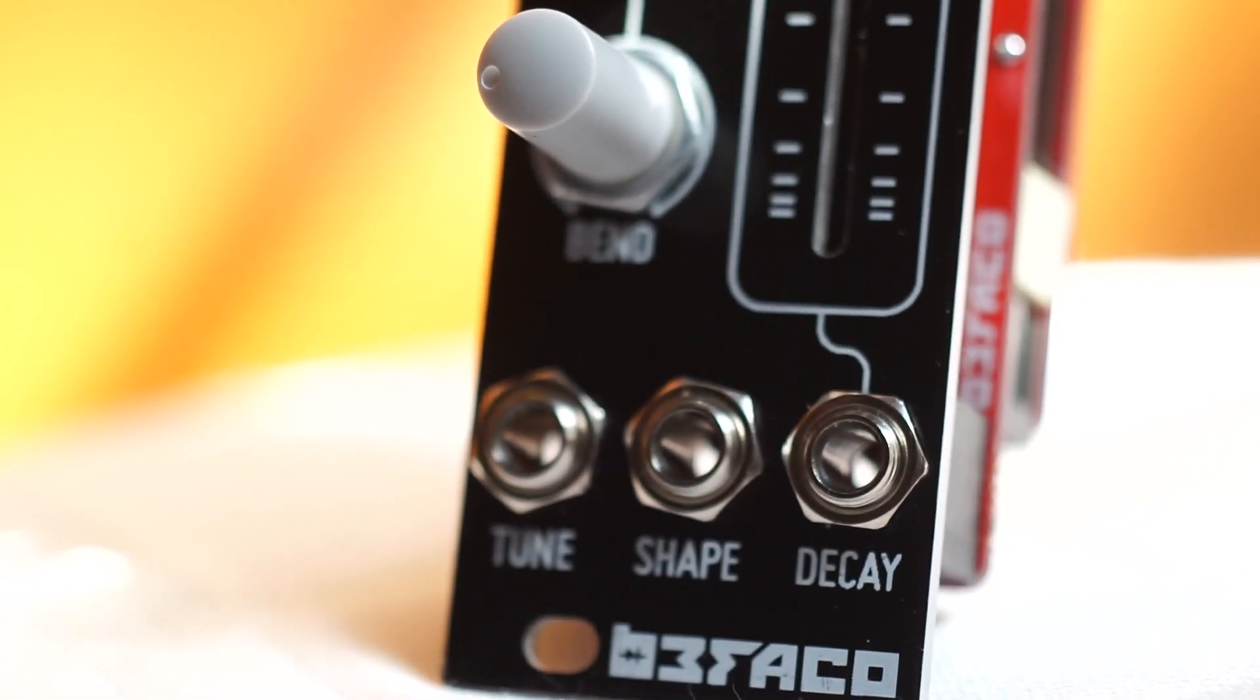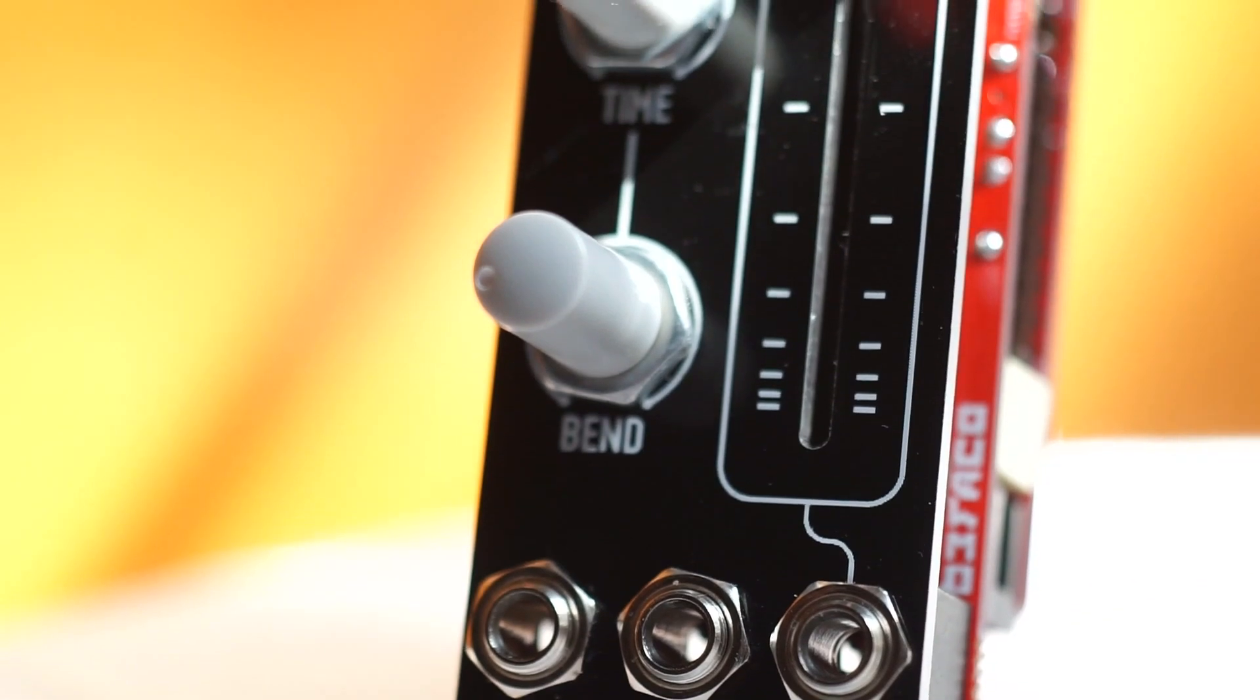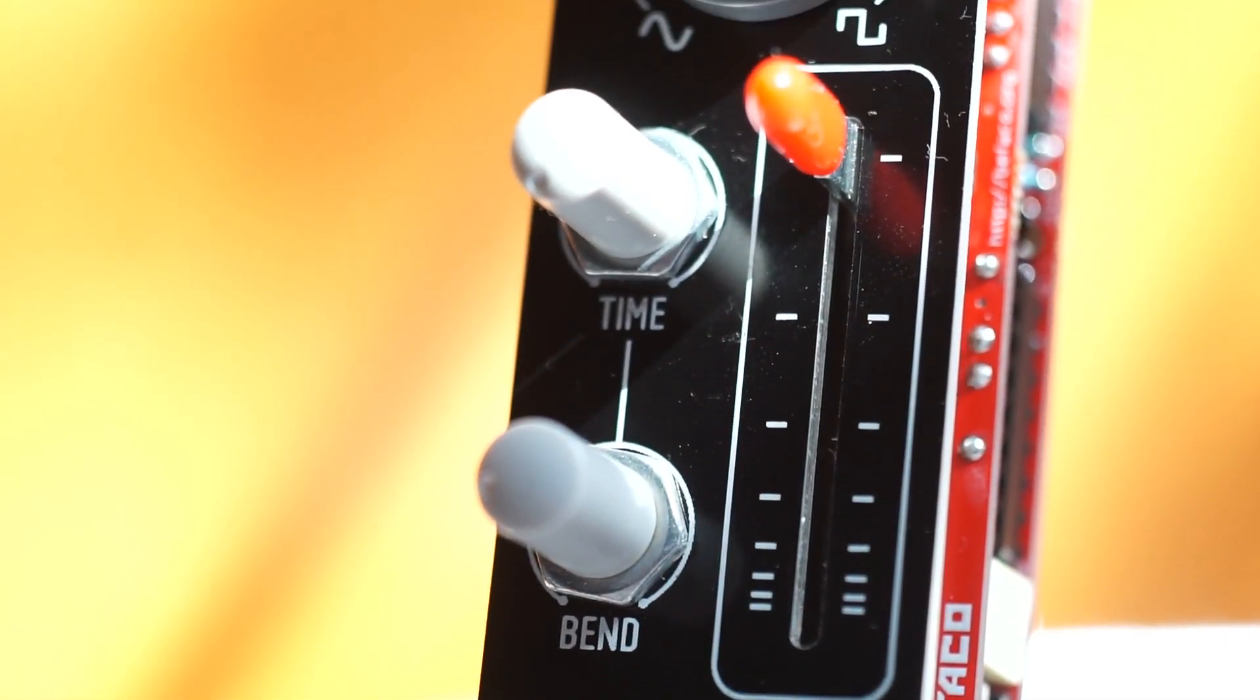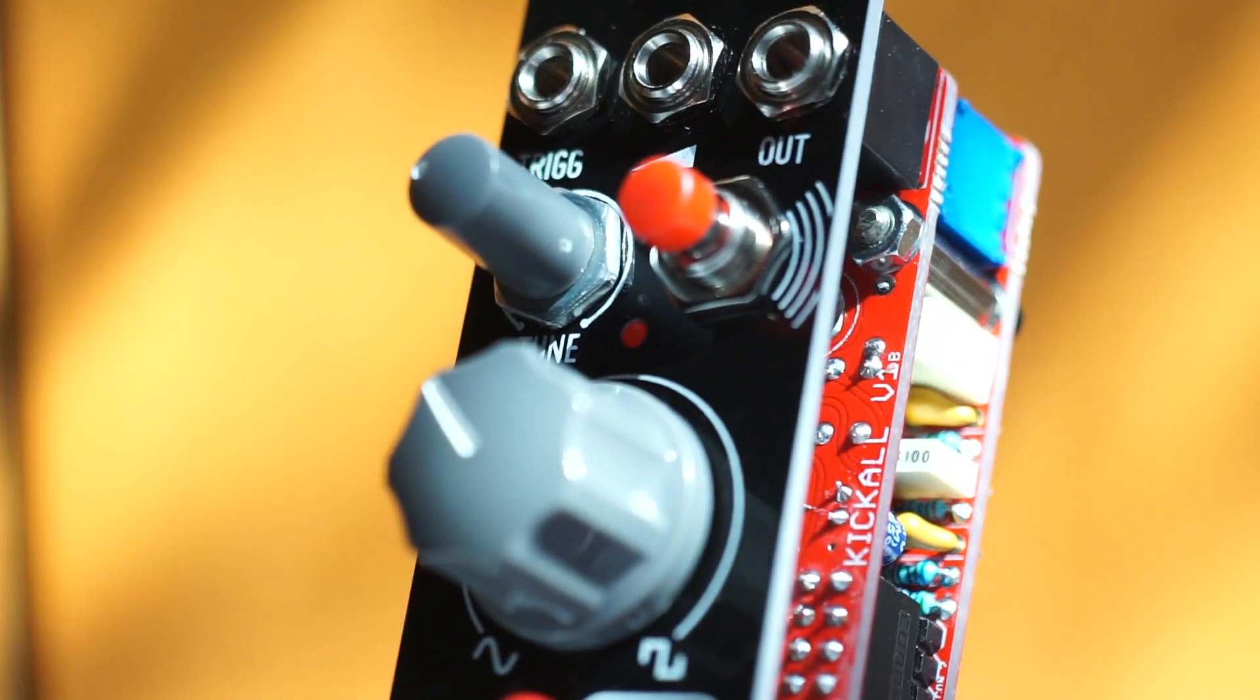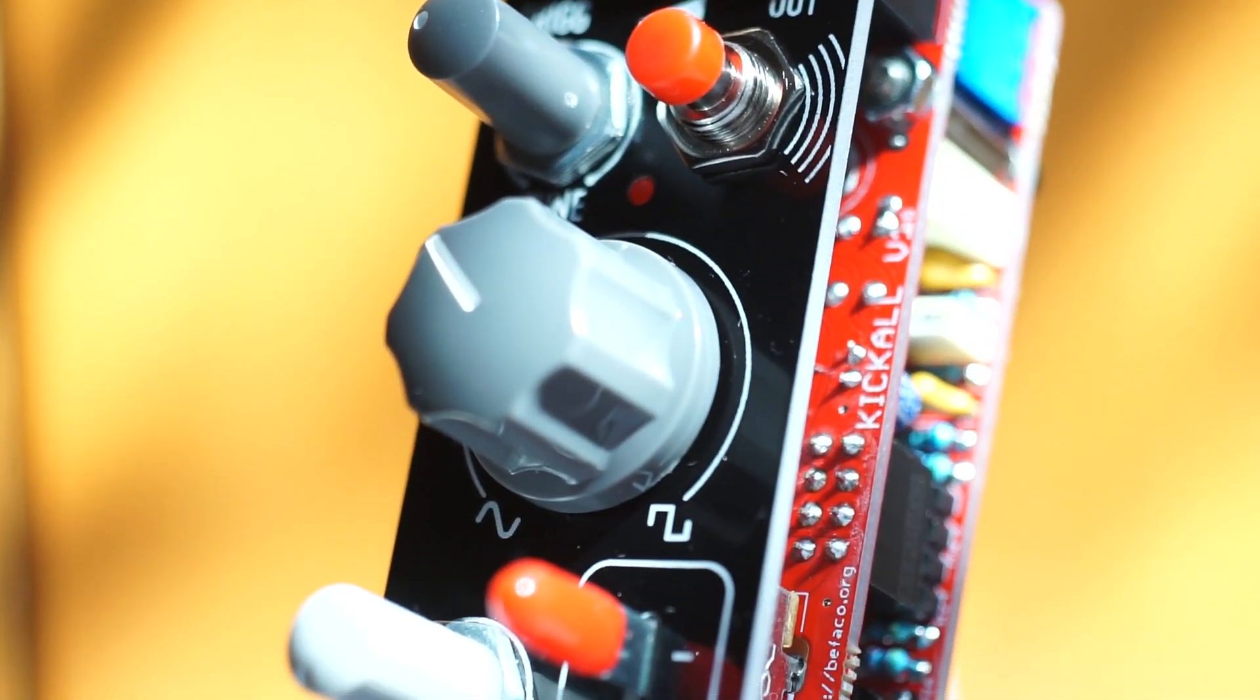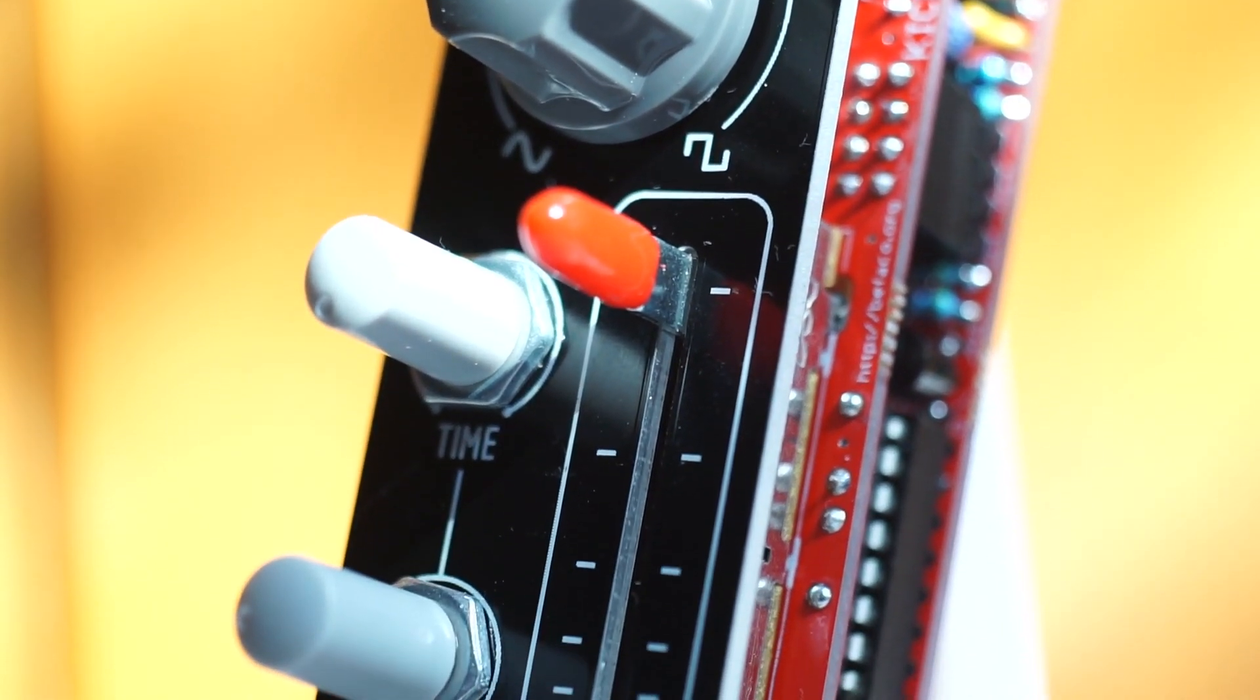The Kickall is actually a condensed collection of the modules you would probably use to patch a kick drum. It has a very musical 3340 based VCO capable of one volt per octave response, a CV crossfader going between the sine wave and the square.